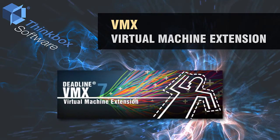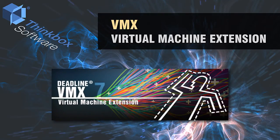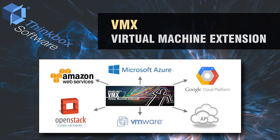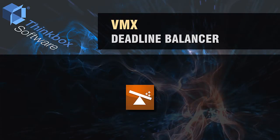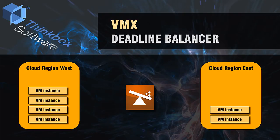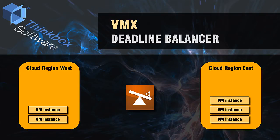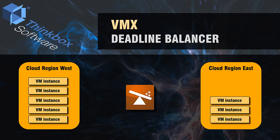VMX is the virtual machine extension for Deadline. VMX allows Deadline to interact with public and private cloud API endpoints to automatically launch and terminate virtual machines based on demand in the queue. At the core of the VMX extension is an application called Deadline Balancer, responsible for communicating with each cloud region and instructing those regions to spin up or shut down virtual machines. The balancer also controls which images are used for VMs, so different types of jobs can be processed using different VM images customized to the type of job.